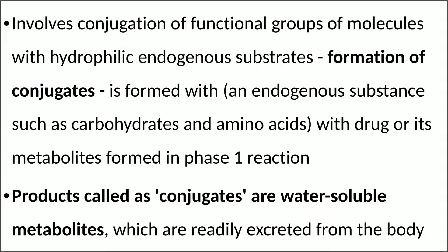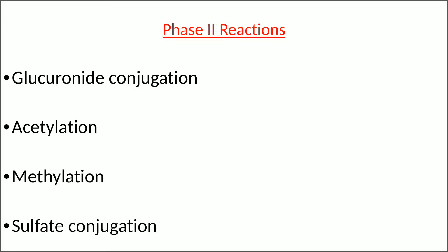These products called conjugates are water-soluble metabolites which are readily excreted from the body. Examples of Phase 2 reactions include glucuronide conjugation, acetylation, methylation, and sulfate conjugation.